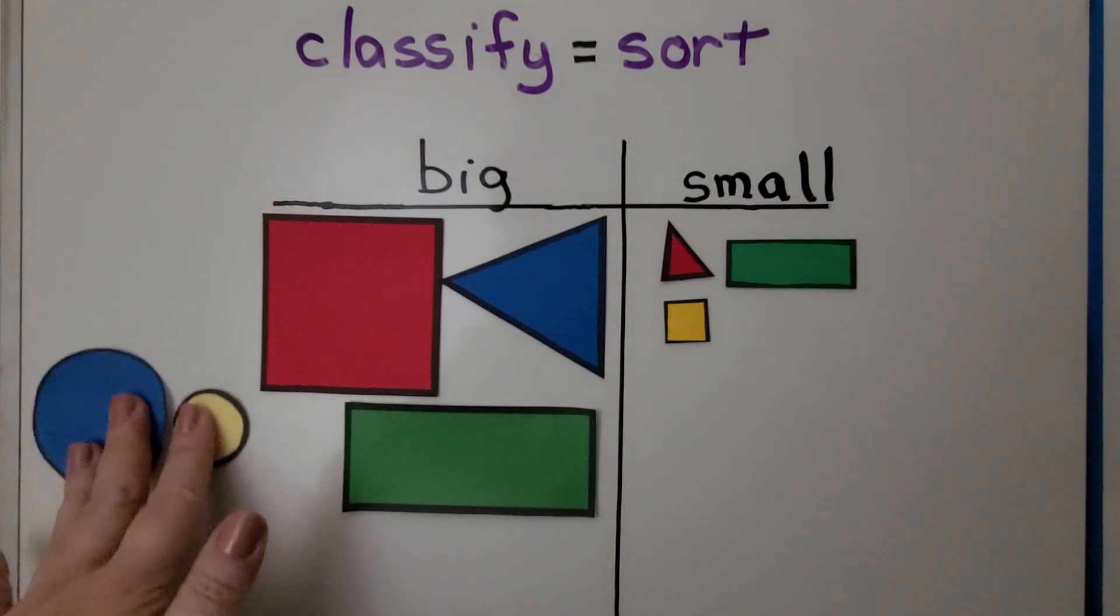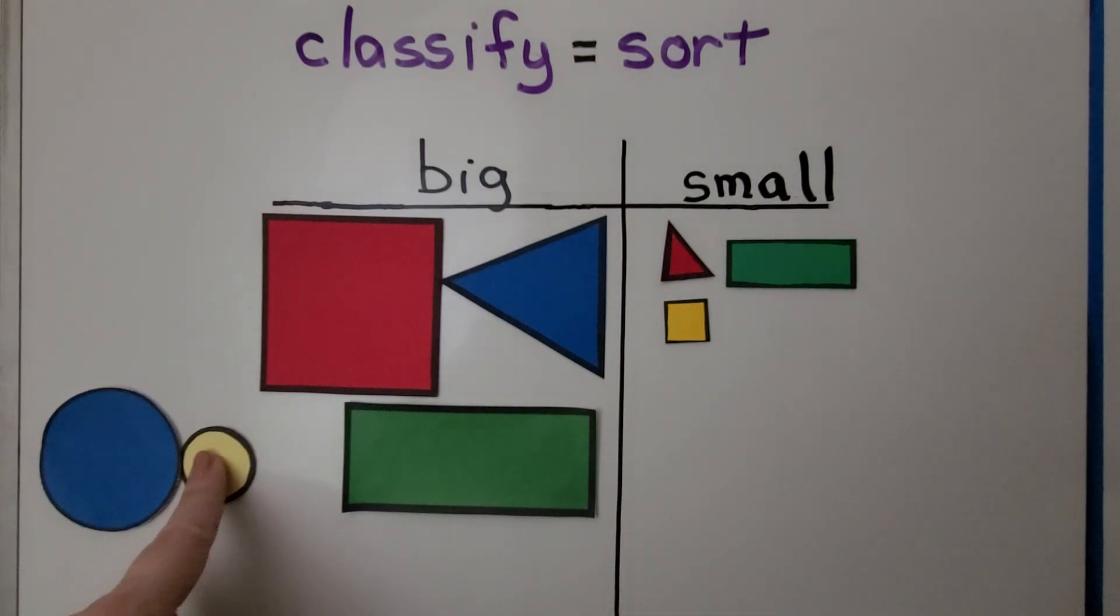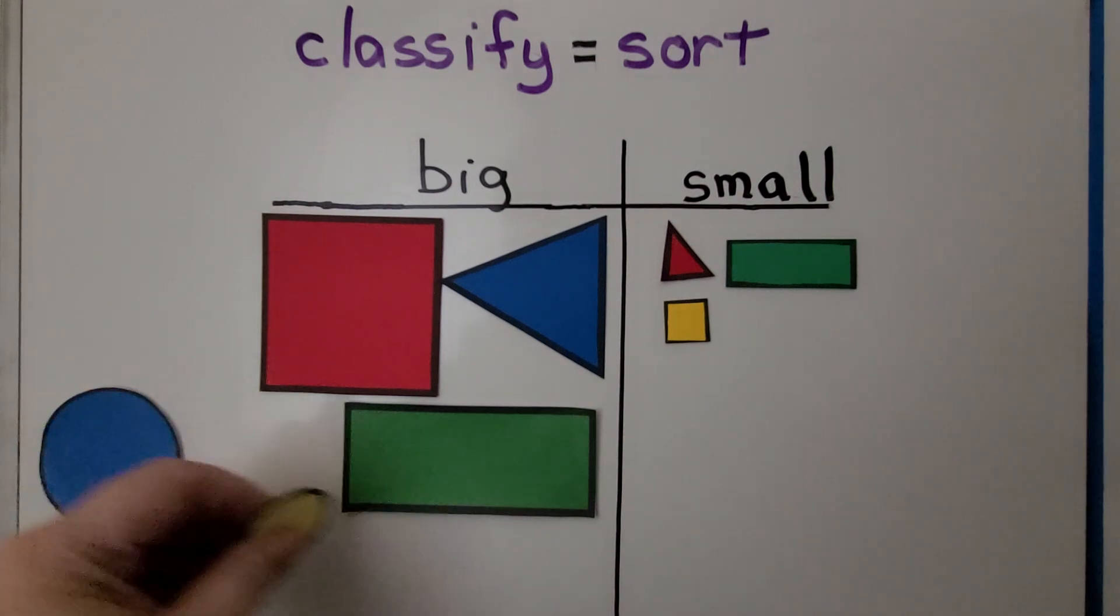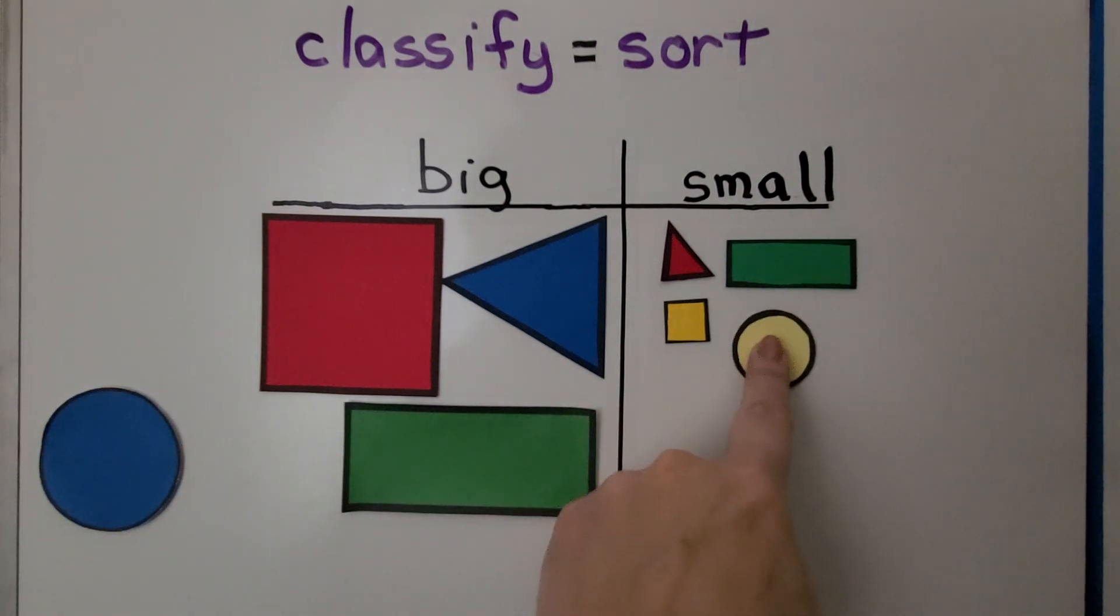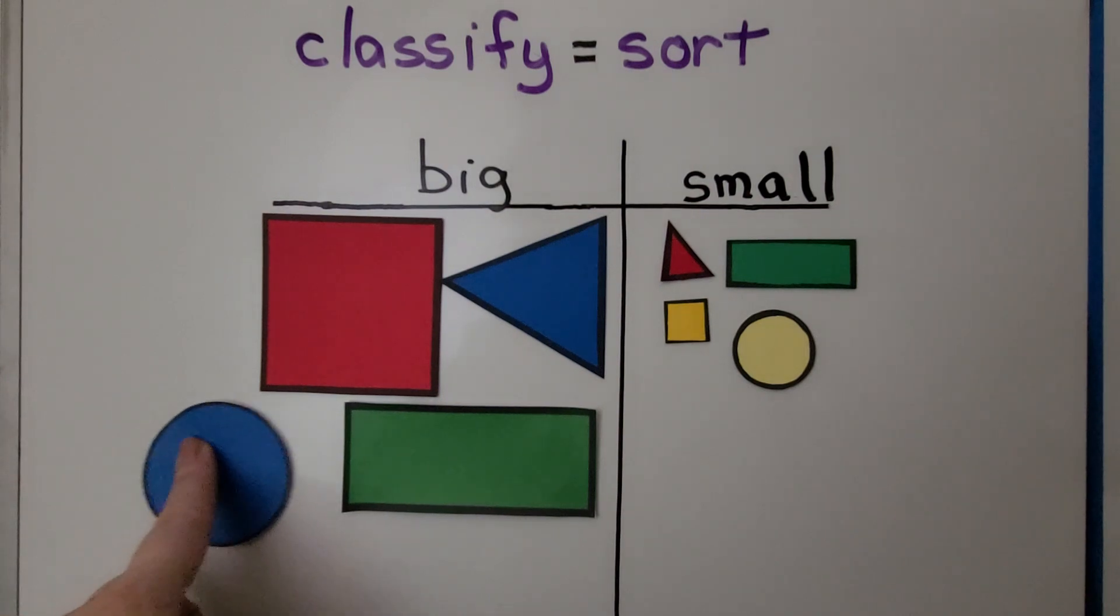Here we have some circles. Which sides should they go on? If you said this goes on the small side you're right. This is a small circle and this is a big circle. This should go on the big side.